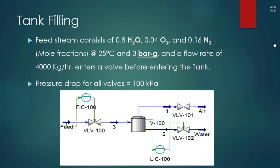Now I have an example. After this long introduction, I need to practice this example with you in order to know how to deal with Aspen HYSYS in both steady state as well as dynamics. In this example, you can see tank filling. The feed stream consists of H2O, O2, and nitrogen. The feed stream conditions are 25 degrees Celsius, 3 bar gauge, and a mass flow rate of 4,000 kilograms per hour. The feed stream enters a valve before entering a tank. Pressure drop for all valves is 100 kilopascal.